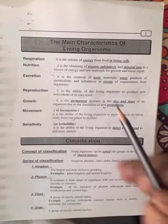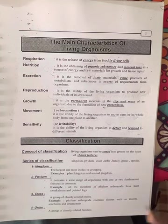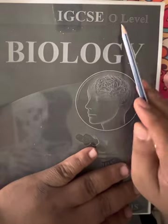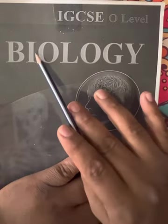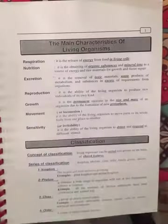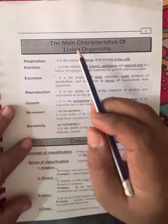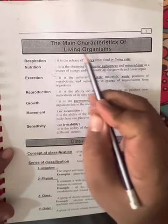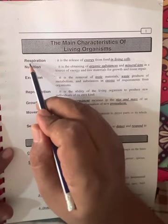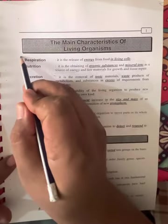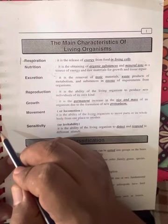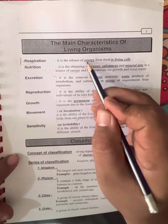Hello and welcome dear students. Today we will study the O Level of IGCSE biology and we will discuss the main characteristics of living organisms. The first characteristic is respiration. Respiration is the release of energy from food inside living cells.